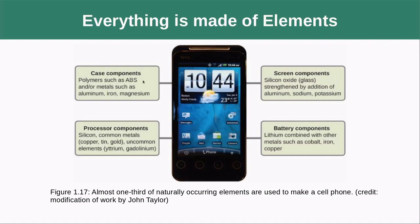Everything is made of elements — every object is made of some combination of those elements. Looking at a cell phone, you have polymers such as ABS plastic, metals made out of alloys of aluminum, iron, and magnesium. The processors are made out of silicon, copper, tin, gold, and even rare ones like ytterbium and gadolinium. The screen components contain glass, aluminum, sodium, and potassium, and batteries are made out of lithium, cobalt, iron, and copper. Almost one third of naturally occurring elements are used to make a cell phone.